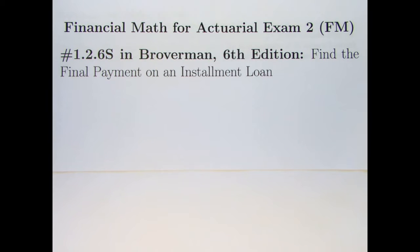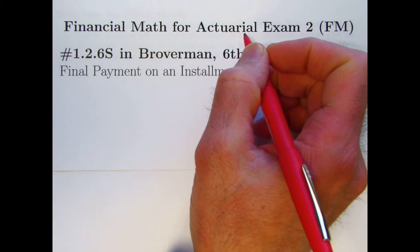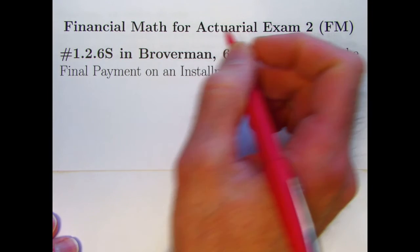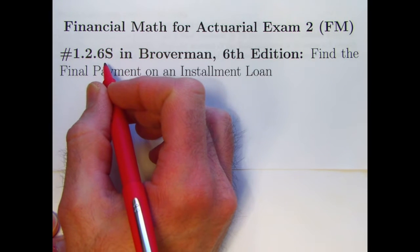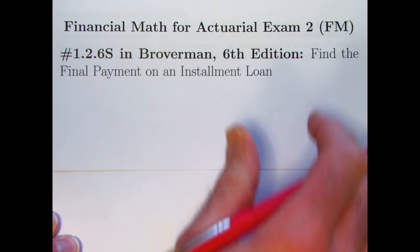Hi, this is my fourth video in helping people study for Actuarial Exam 2 on Financial Math. In this video we're going to look at problem 1.2.68S in Broverman, finding the final payment on an installment loan.